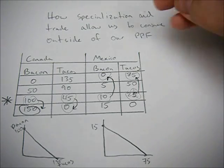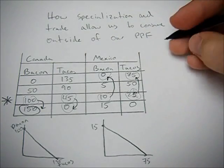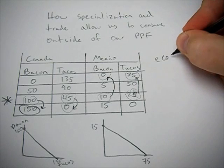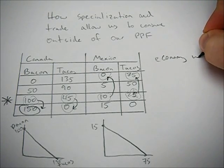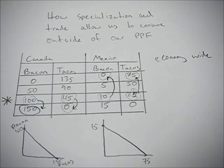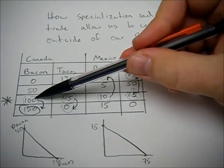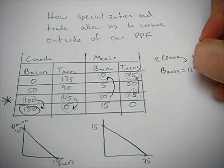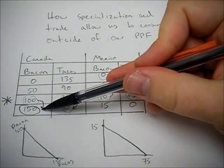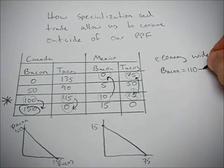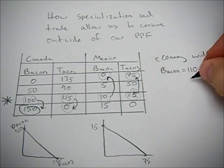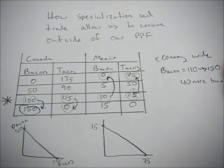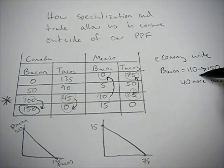So now, after they've specialized, let's look at economy-wide values. Before specialization, we were producing 100 plus 10 bacon. So bacon equaled 110. Now, economy-wide, we have 150 bacon. So we're producing 40 more bacon. And that's a result of specializing and trade.